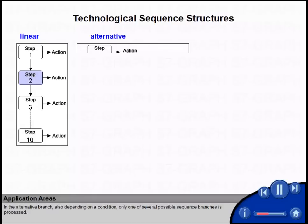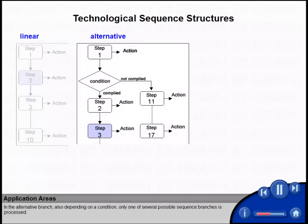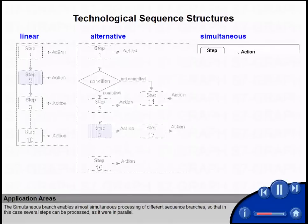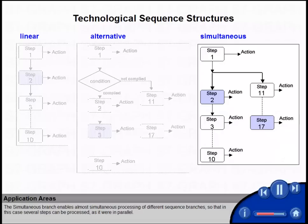In the alternative branch, also depending on a condition, only one of several possible sequence branches is processed. The simultaneous branch enables almost simultaneous processing of different sequence branches, so that in this case several steps can be processed as it were in parallel.